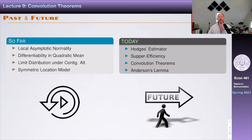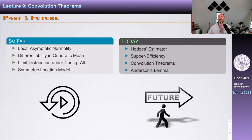Today we're going to deviate and not talk about testing — no size, power, and so on. We're just going to focus on estimation. When we talk about estimation, we typically make statements about asymptotically normal estimators and their asymptotic variance, and we really like to use the word efficiency. We want estimators with minimal variance.